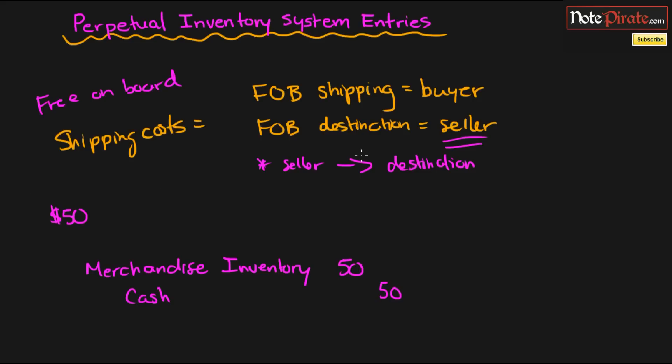And if we had FOB destination, the seller is going to be paying for those costs. So what are we going to report as a transaction? Well there's going to be no entry, right? Because we're not the seller. We're the purchaser of the goods. And since we are purchasing the goods, we're not paying for the shipping costs. So it's not on our books.